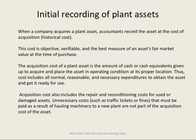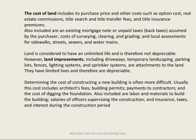Initially recording the asset, we have the purchase price, but the asset costs also include all normal, reasonable, and necessary expenditures to obtain that asset, get it to your plant, and get it ready for use. For land, we include the purchase price of land, but there's also real estate commissions, title search, title transfer fees, insurance premiums. If we had to clear the land, the cost of surveying the land — all of those would be part of the cost of land.